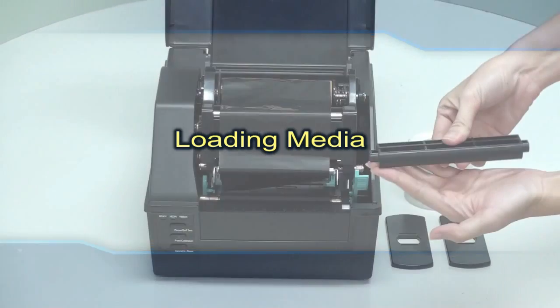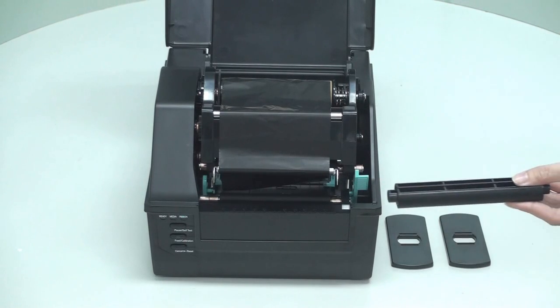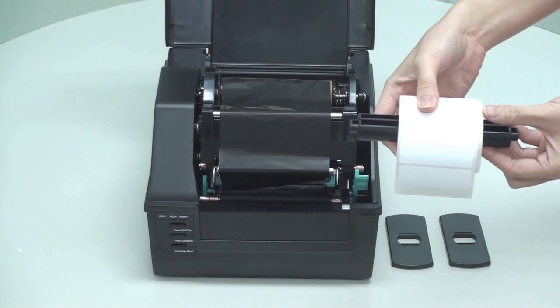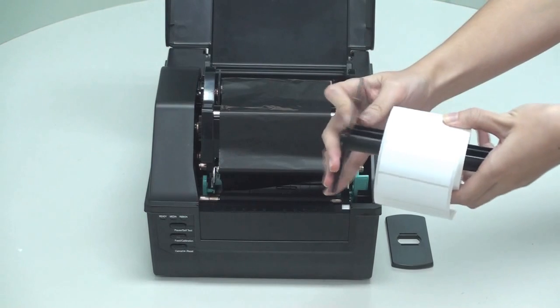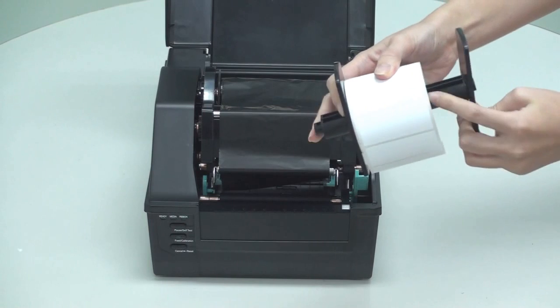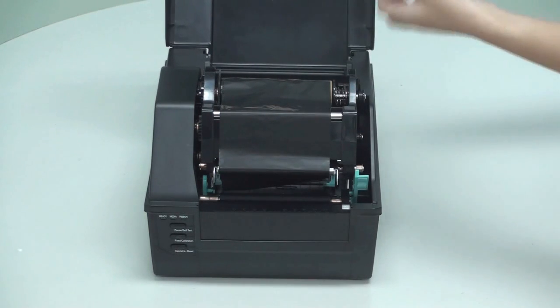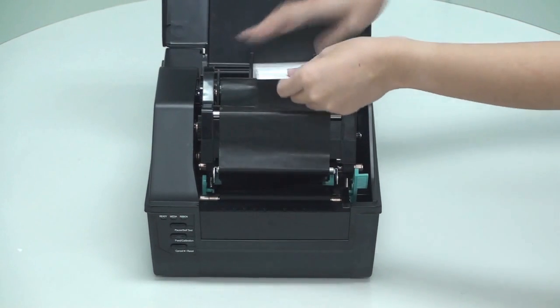To load media, first take the media spindle and notice the scales on the spindle. Use these scales as guide marks to make sure the media is positioned in the middle of the spindle. Now, position the two media roll guides onto the media spindle at each end, with the guide's smooth side facing towards the media. Place the complete unit onto the media compartment with the labels facing up.